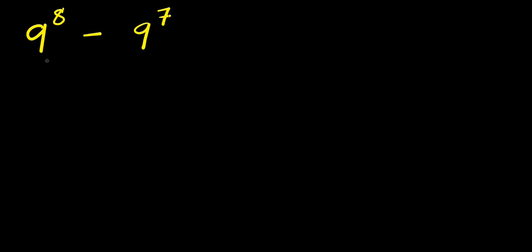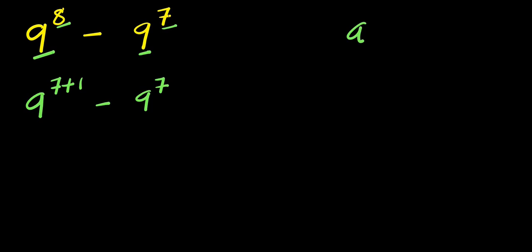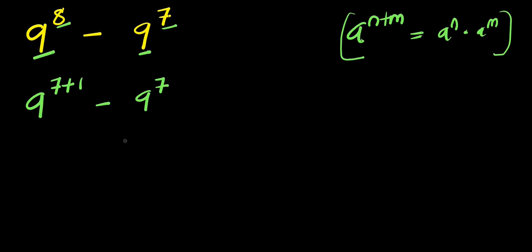Hello, how to evaluate this: nine to the power eight minus nine to the power seven. We have nine to the power eight, and we can express the exponent eight as seven plus one. So we apply the identity: a to the power n plus m equals a to the power n times a to the power m.